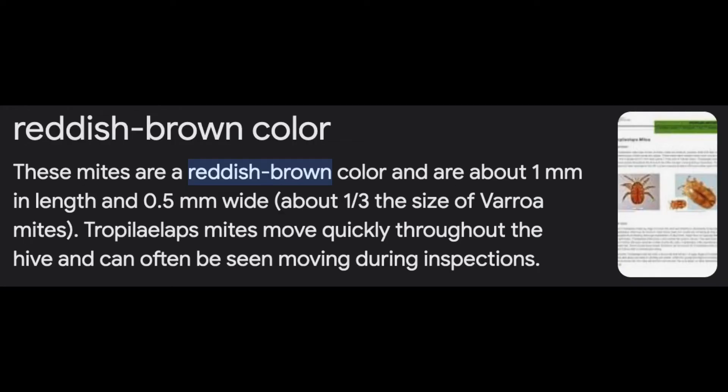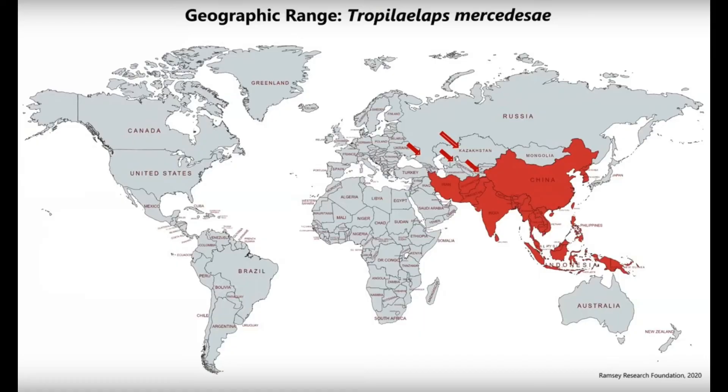I suspect it's also not a coincidence that the Tropilaelaps mite is also a reddish brown color. If you haven't heard of this mite before, it's currently in Asia, and from all indications it looks like it's going to be as bad, if not worse, than the varroa mite if it comes to the Western world. If you're curious about other threats coming to the United States, take a look at my video on the Asian Hornet — I think you'll find it very interesting. If you've gotten value out of this video, please like and subscribe.